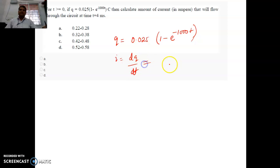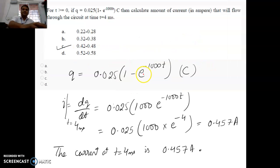And after evaluating it, substitute the value of time equals 4 milliseconds. So after evaluation and doing the derivative, we get the value of the current. By evaluating this, we get the value is 0.457. So 0.457 is in between 0.42 and 0.48. The answer is C. This is very simple. Charge is given, find the value of current at 4 milliseconds.